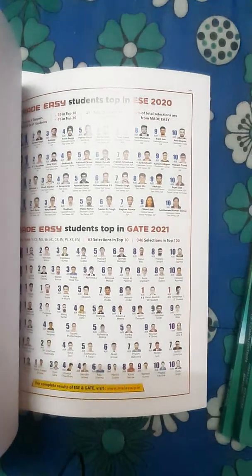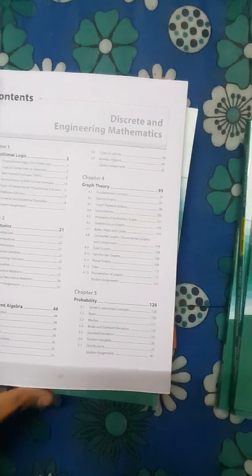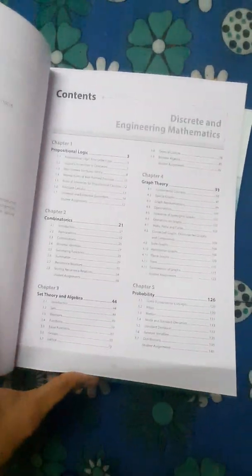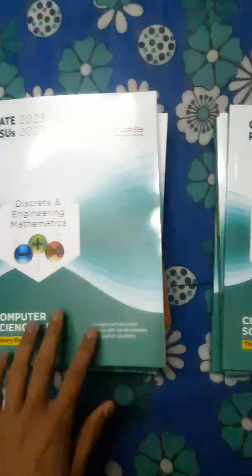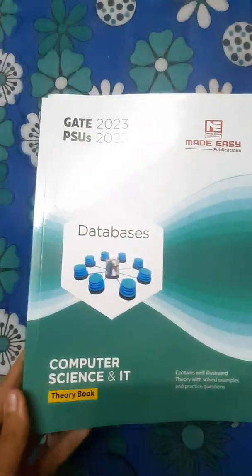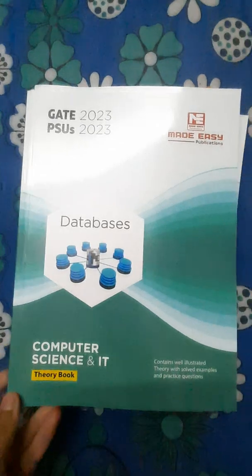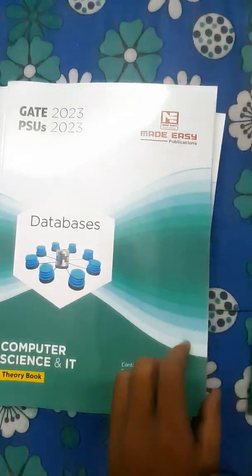Here are the previous GATE toppers and some EASY toppers referenced in the theory book. Then comes the theory book of Discrete and Engineering Mathematics, covering content such as propositional logic, set theory and algebra, probability, graph theory, linear algebra, and calculus.